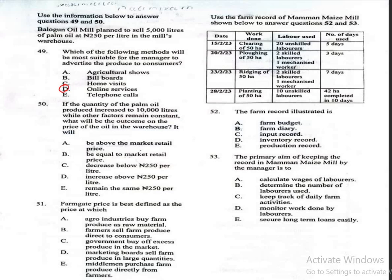Question 50: If the quantity of the palm oil produced increased to 10,000 litres while other factors remain constant, what would be the outcome on the price of the oil in the warehouse? The correct answer is C, decrease below 250 naira per litre.